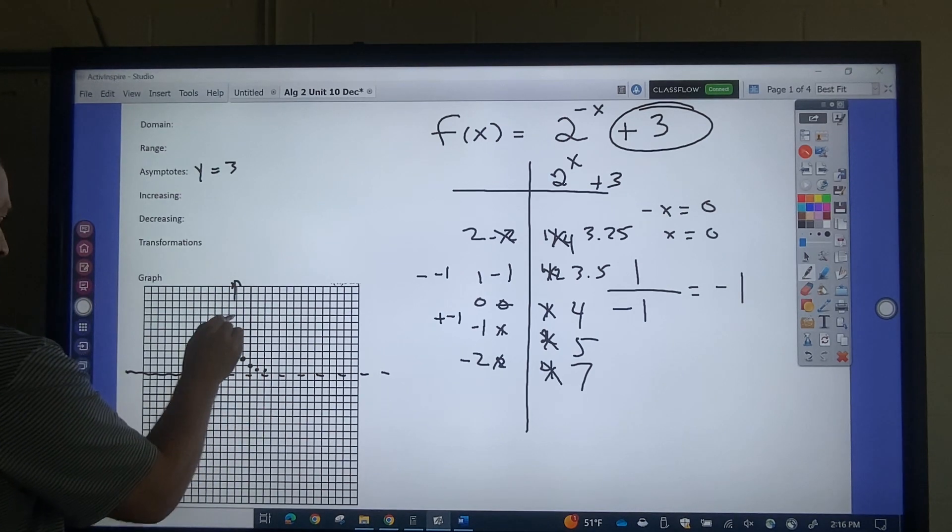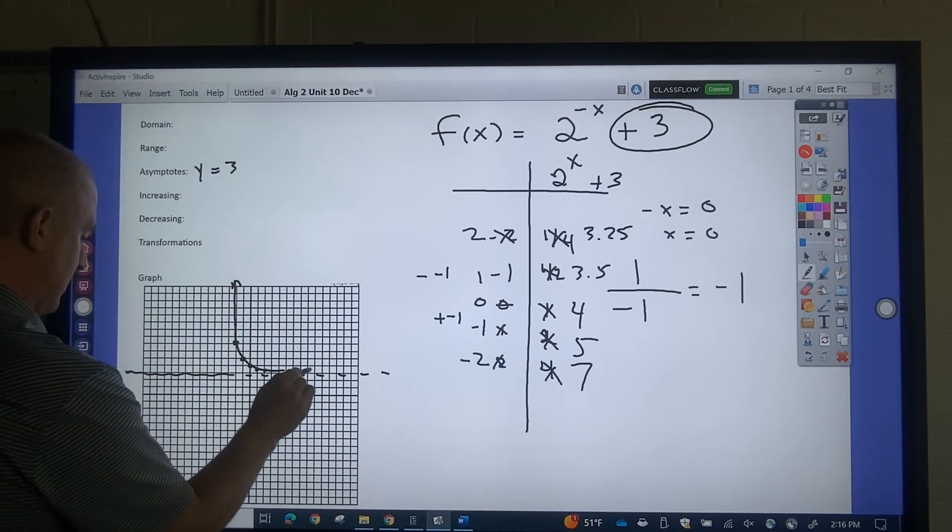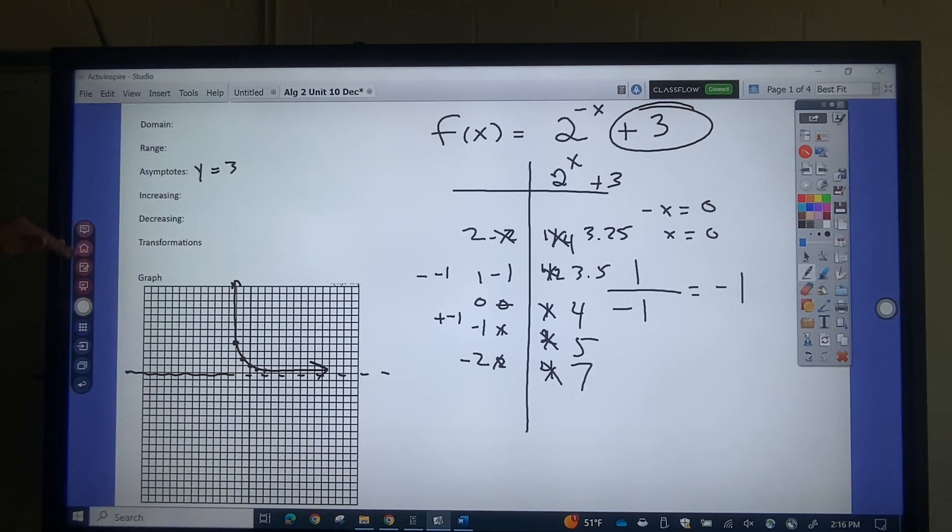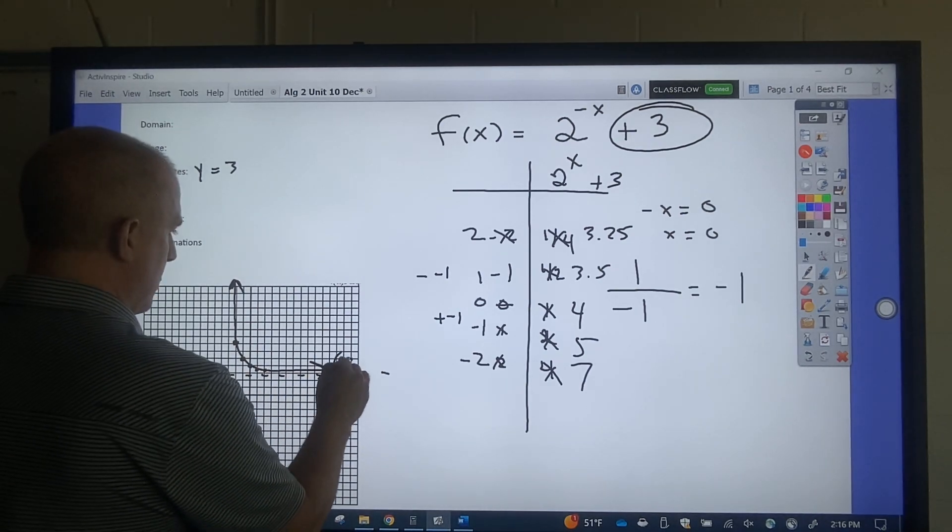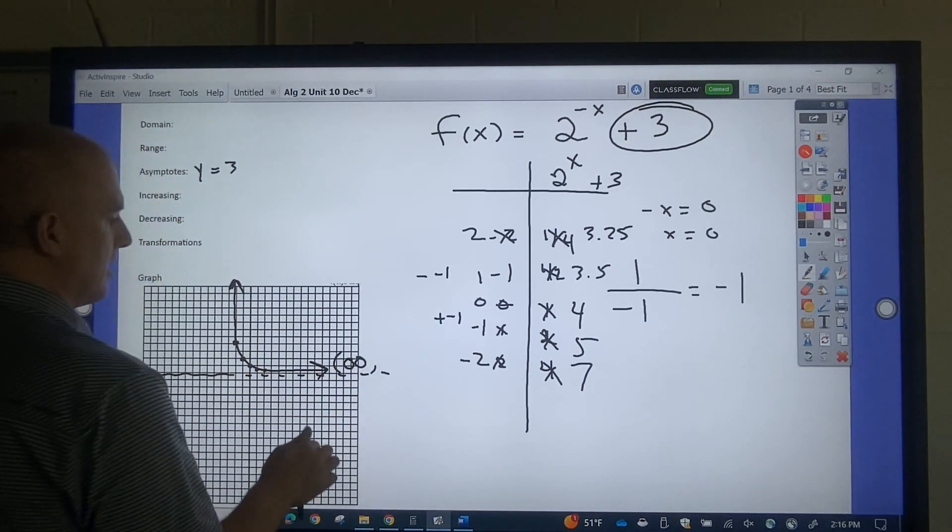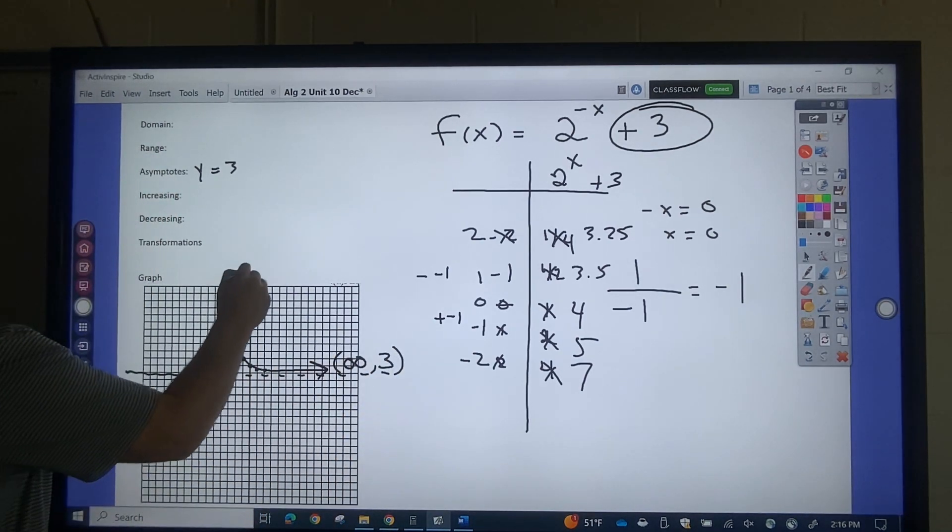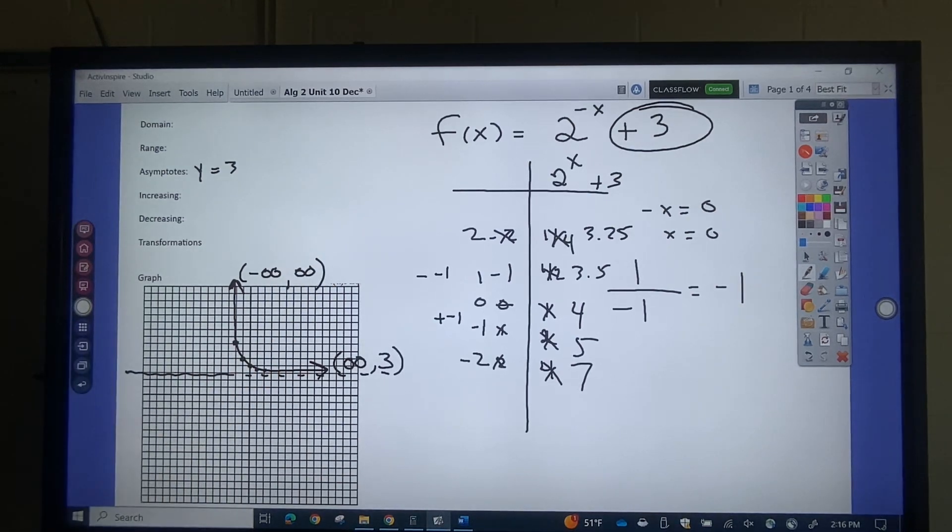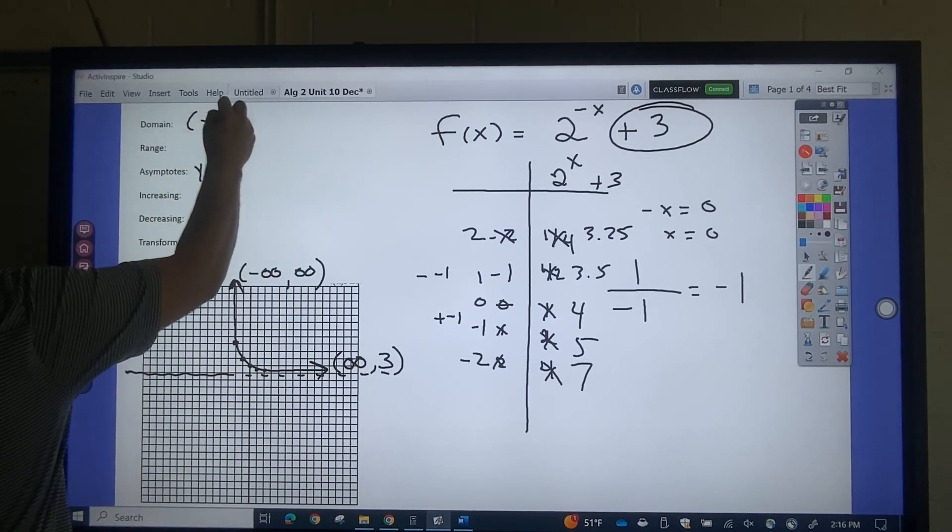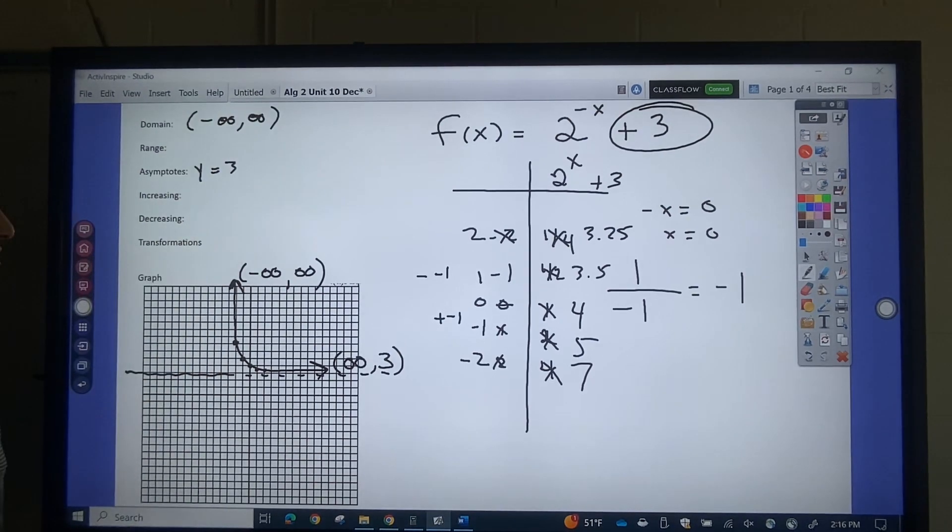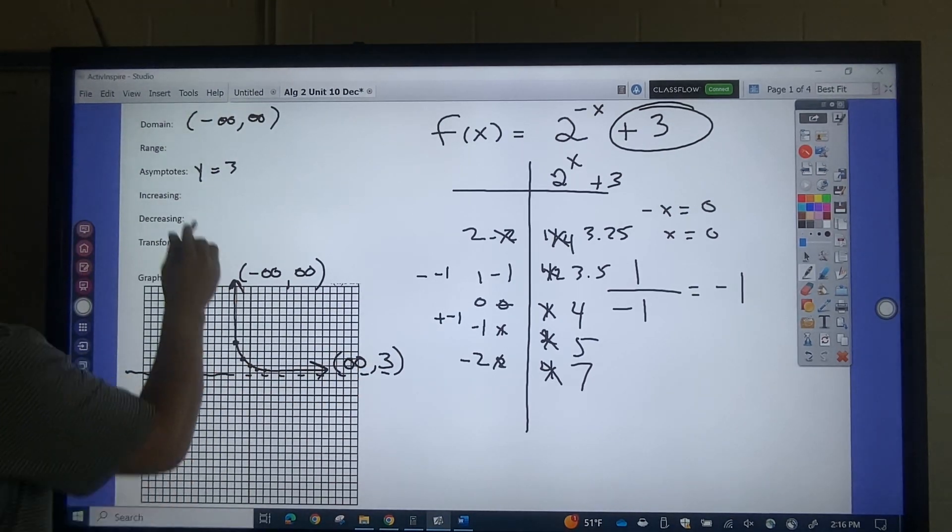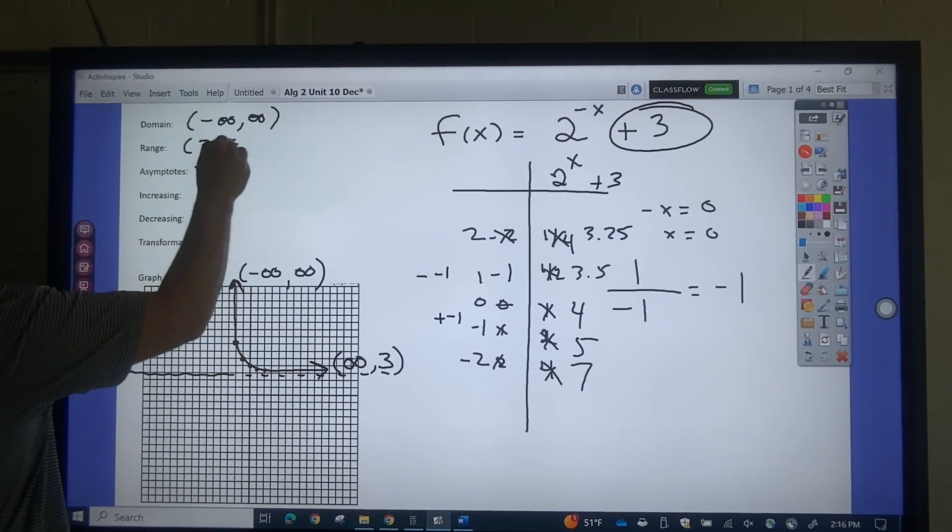And so what happens with this one is what you have is a decay. It's growing down. We'll get to the applications of this later. So if I'm labeling my arrows, that's a right arrow, and it's leveling off at 3. This is a left arrow going up. So my domain, smallest x to biggest x, negative infinity to infinity. My range is 3 to infinity.